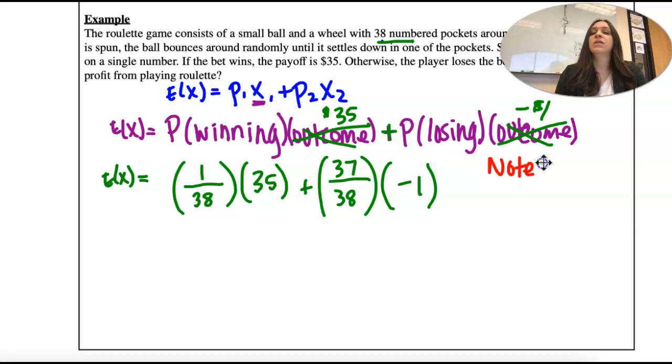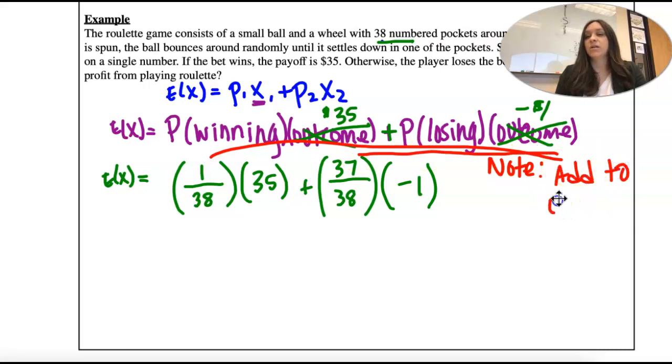So I want to add a note here. Your probabilities, notice that they add to 1. That happens every time. So 1 here, there has to be 37 here. It's 1 or the other.